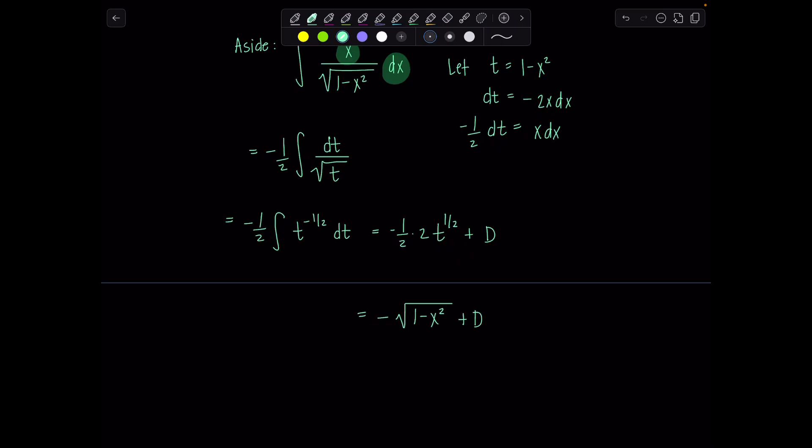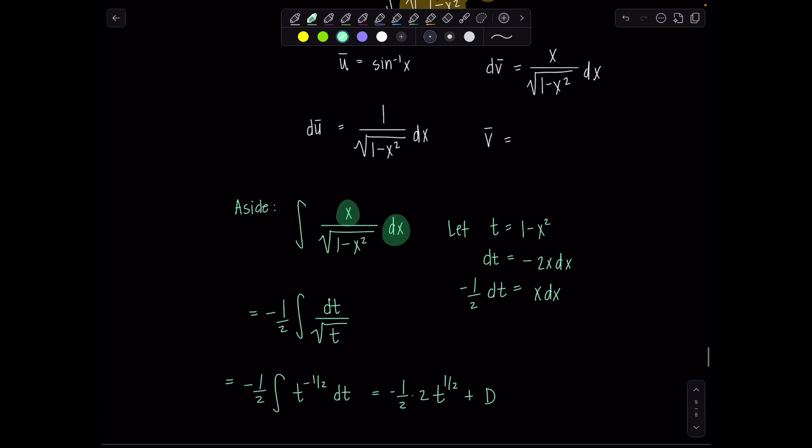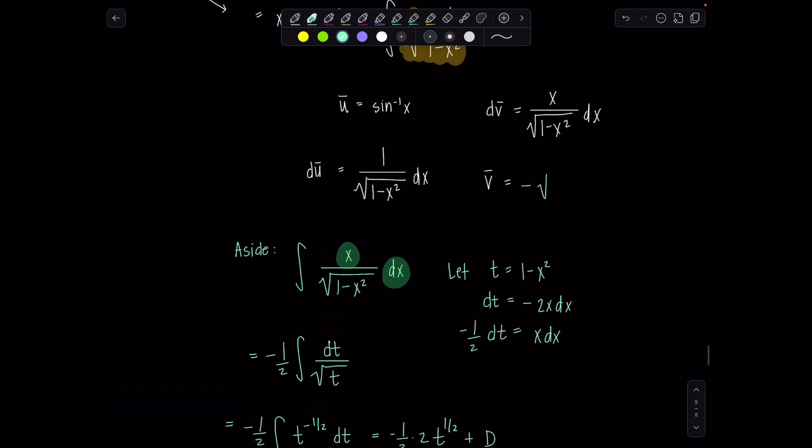Okay so basically we don't need the plus d but I'm going to replace my v bar with negative square root one minus x squared right here. Negative square root one minus x squared. Are we all right? Okay good.